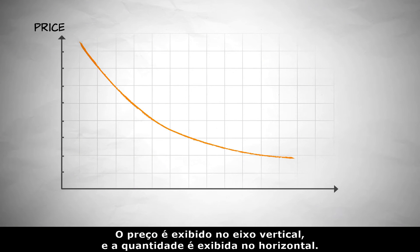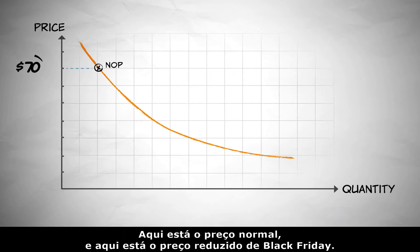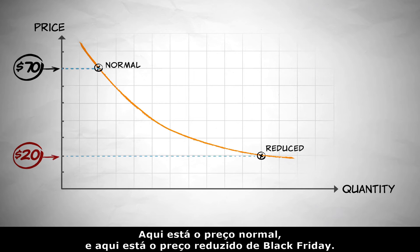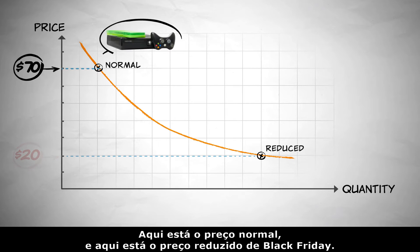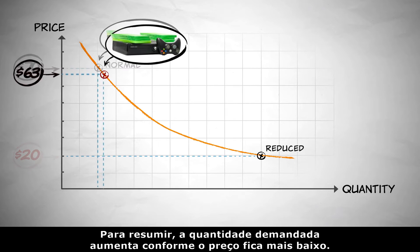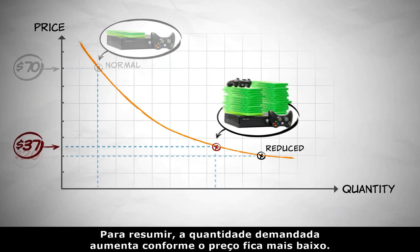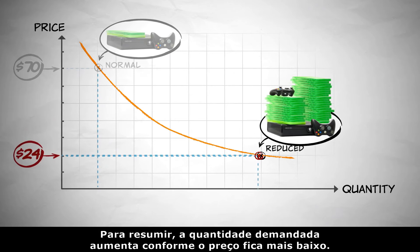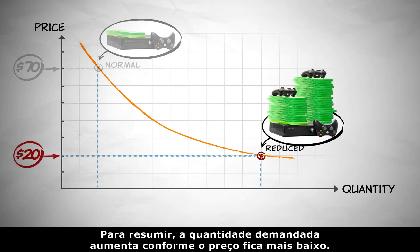Price is shown on the vertical axis, and quantity is shown on the horizontal. Here's the normal price, and here's the Black Friday reduced price. The quantity demanded increases as the price gets lower.